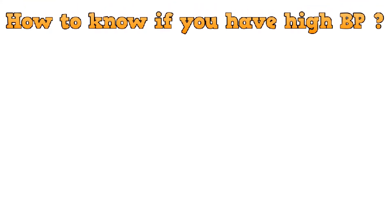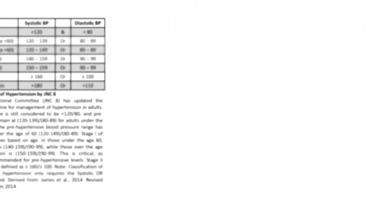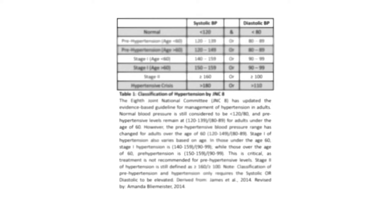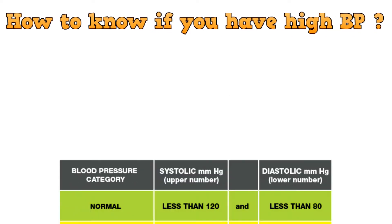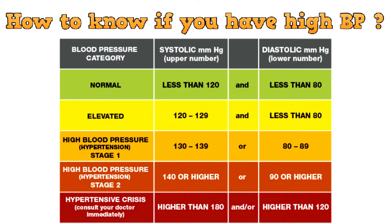So how to know if you have high BP? The doctor concludes their diagnosis with the use of standard values and other measures. If the person has systolic BP less than 120 and diastolic less than 80, then they are normal. If they have systolic BP in the range of 120 to 129 and diastolic less than 80, it is slightly elevated.